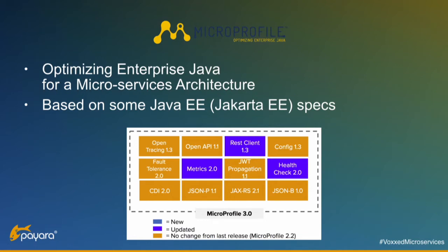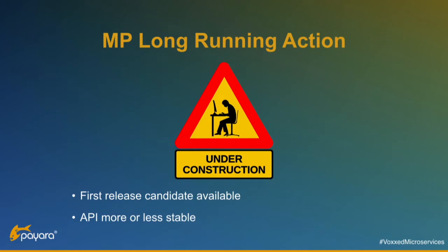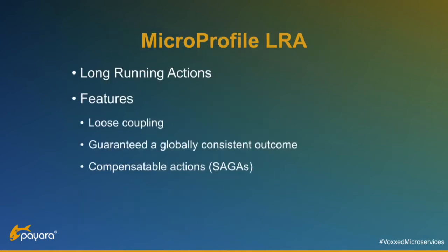There is a whole bunch of specifications available with different runtimes — it's not only one vendor providing all these specifications. We have a first release candidate available for MicroProfile Long Running Actions, which is based on the SAGA pattern. The API is more or less stable — there has not been a single change in the API in the last two or three months. We're just fine-tuning the specifications and writing more TCK tests. It's a good time to have a look at it. It is very loosely coupled — you only have one header that is propagated through all your microservices.